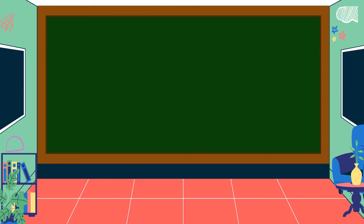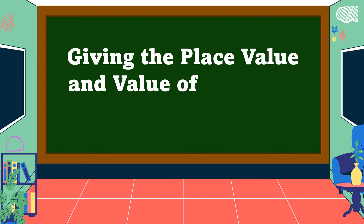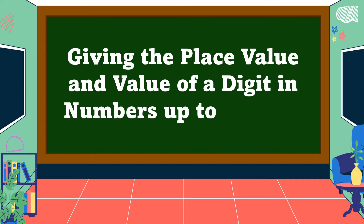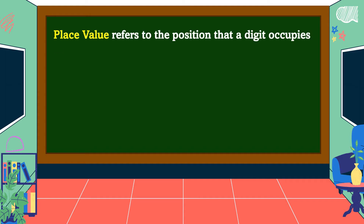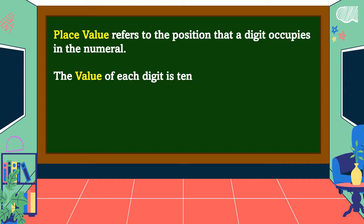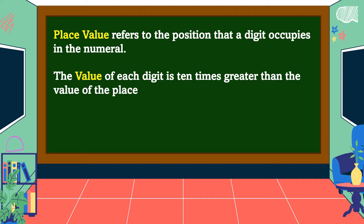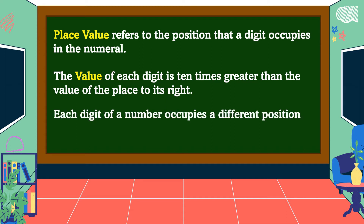Hello everyone, welcome to Math is Fun. Our lesson for today is all about giving the place value and value of a digit in numbers up to one hundred thousand. Place value refers to the position that a digit occupies in the numeral. The value of each digit is ten times greater than the value of the place to its right.